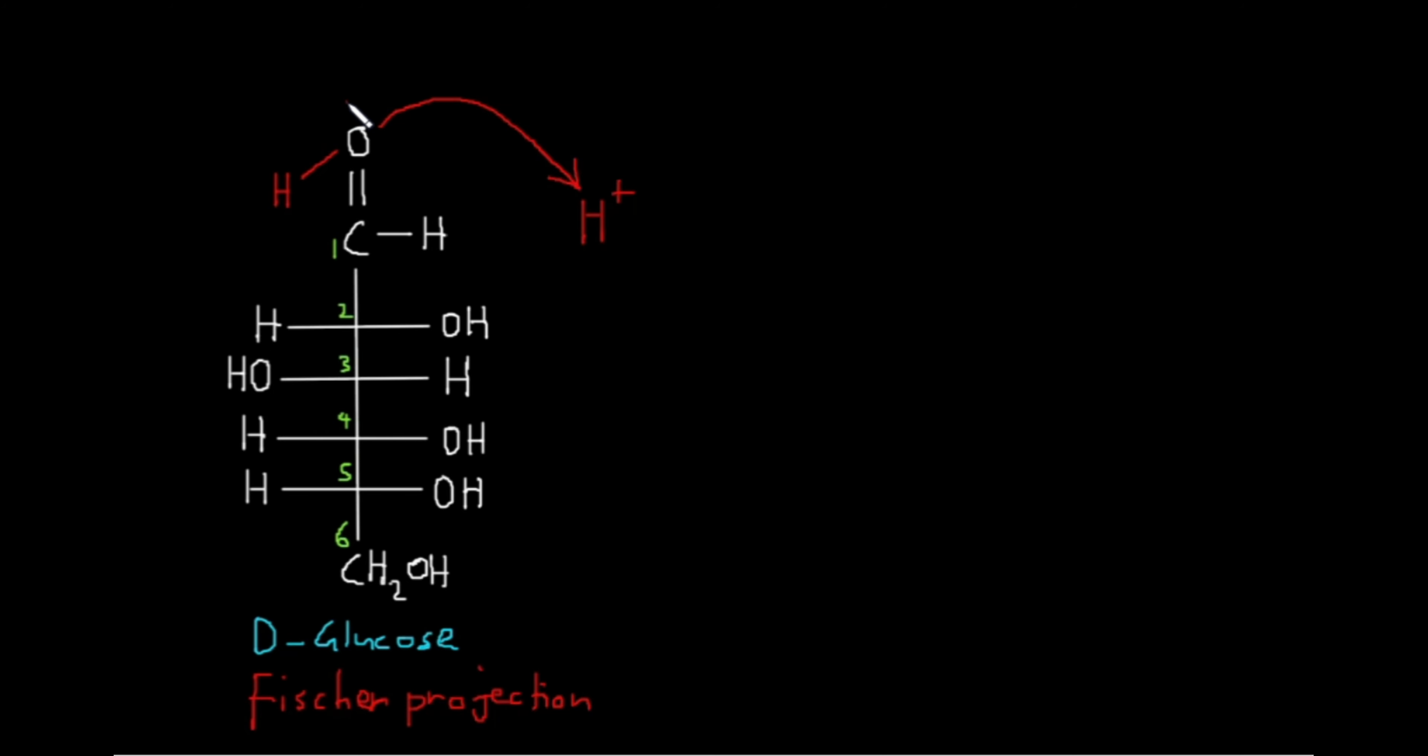Let's try to draw the basic ring of the cyclic structure based on what we know. We'll start from the right side from the first carbon and go to the left and slowly towards the top, and we'll stop at the fifth carbon.